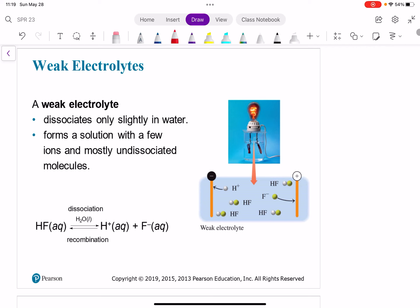All right, and then we have weak electrolytes. And weak electrolytes dissociate only slightly in water. So unlike strong electrolytes, which completely dissociate in water into their separate ions, weak electrolytes only dissociate a little bit in water. So some of those are going to separate into their individual ions, but a lot of it is actually going to stay as HF.